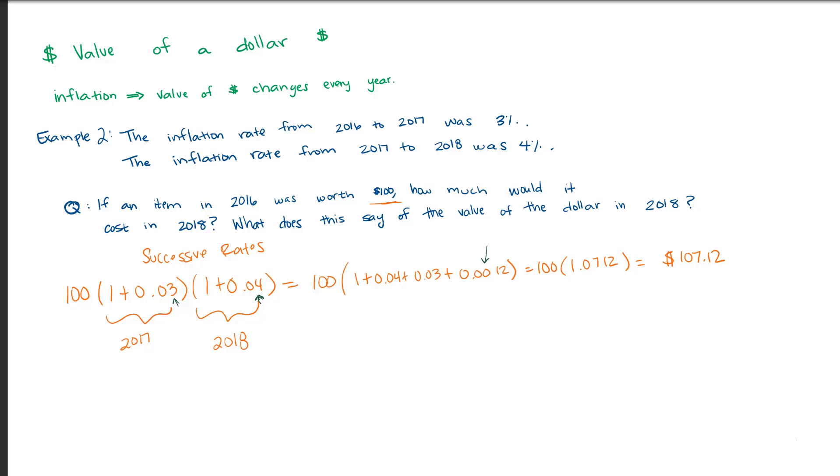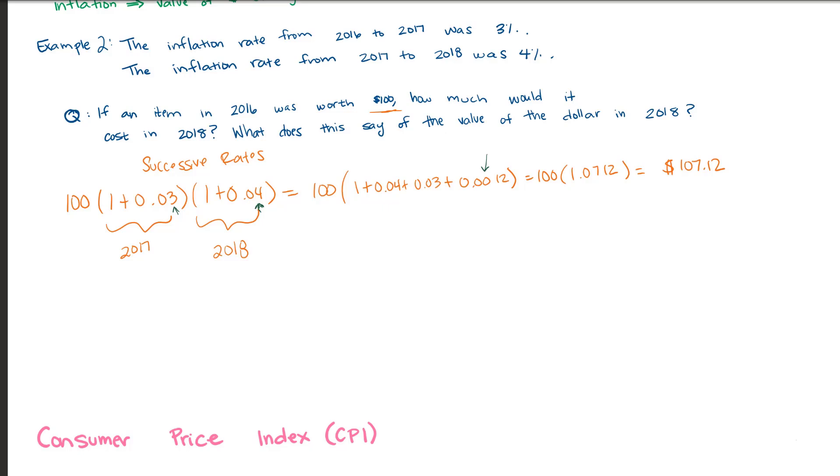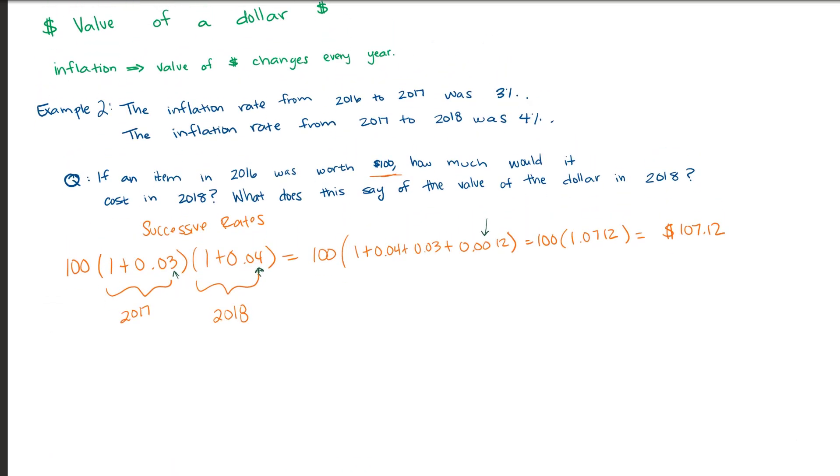Once we simplify, we arrive at the conclusion that the $100 priced item from 2016 is now worth $107 with 12 cents in 2018. From here, we can now explore the value of the dollar. So to analyze this, we're going to look at new over old. So this is the price from 2018 divided by the price from 2016, and we get 107.12. So what does this mean in terms of the value of the dollar? That a dollar from 2018 is the same as 1.07, I'm using these units because of money, 1.07 times the amount of a dollar from 2016.